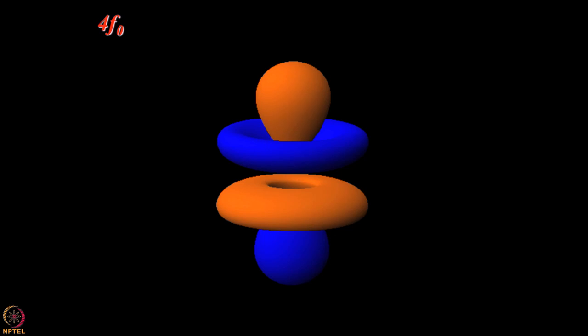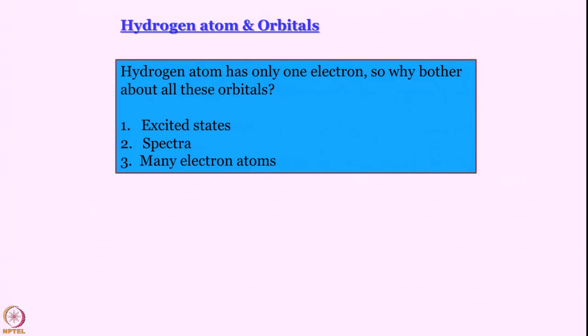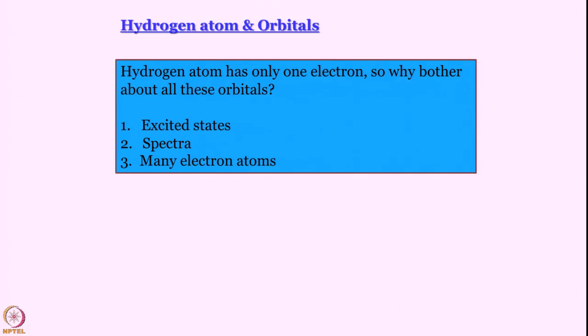Similarly, we are not going to talk about f orbitals in detail, but I will show you the constant probability surfaces and nodal surfaces of the f₀ orbital. This is what we wanted to say about hydrogen atom wave functions — the orbitals. The question is: hydrogen has only one electron, so why do we need s, p, d, f orbitals? Because first of all, we want to access excited states and discuss spectra. We also want to talk about many-electron atoms and molecular orbitals. We are going to see how these orbitals are used to work out wave functions for H₂⁺.